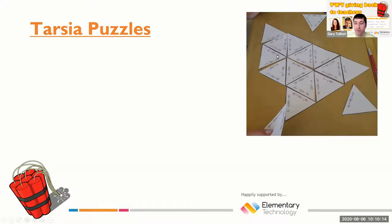This example uses mathematical equations. What pupils have to do is match up one side of the triangle with the answer on another side of the triangle. You can do this with questions, or you can use maths equations and answers.